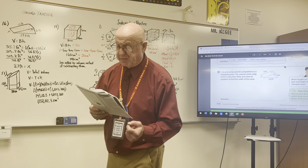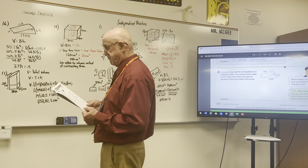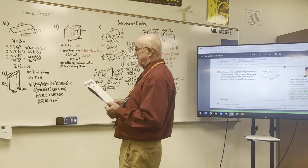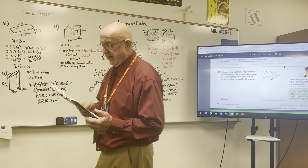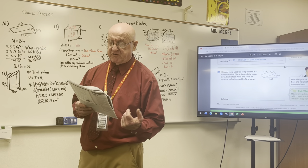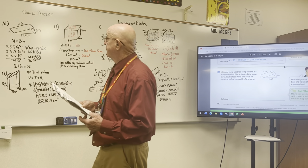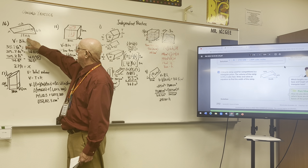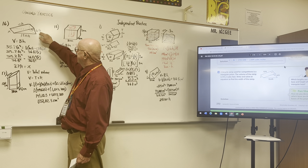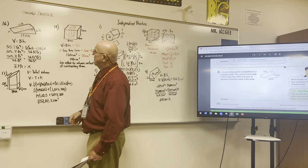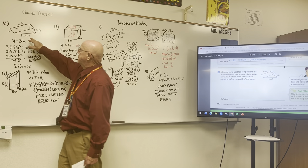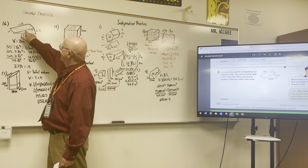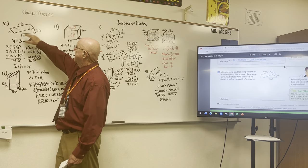Problem number 16 says a bicycle ramp used for competitions is a triangular prism. The volume of the ramp is 313.2 feet cubed. We want to write and solve an equation to find the width of the ramp. So the width of the ramp is x. They gave us the base of the triangle at 13.4 feet and the height at 6 feet. Actually, the 13.4 does not matter because that's the hypotenuse. The actual leg we're looking at is 12 feet — that's the height.